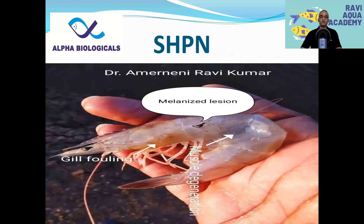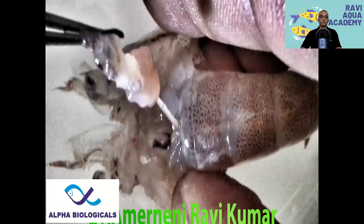This is the picture of SHPN — septic hepatopancreatic necrosis. In this case, the hepatopancreas becomes very small, technically called atrophied. Then it leads to loose shell, and in some cases, because of delayed molting, you can also find gill falling. In this picture, you can clearly see shrimp with SHPND — the hepatopancreas is atrophied, very small and white in color.